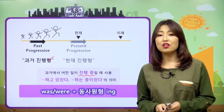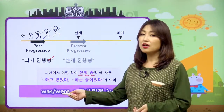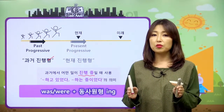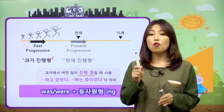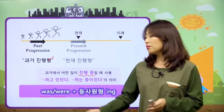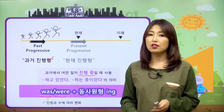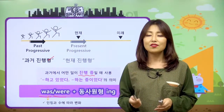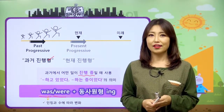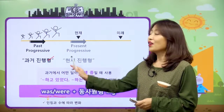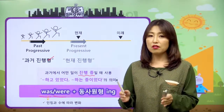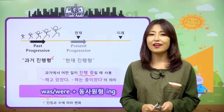진행형의 기본 형태가 뭐였어요? be동사에 동사원형 ing 붙이는 게 진행형의 기본 form이었는데, 과거니까 be동사가 과거로 변해야 돼요. 과거형 be동사는 딱 두 개, was 그리고 were가 있었죠. 이 be동사는 인칭과 수에 따라서 was냐 were냐를 선택해서 사용하면 되겠어요. 과거 진행형의 기본 형태는 was/were 그리고 동사에 ing를 붙여서 사용하는 거예요.